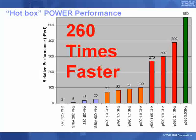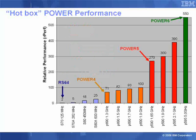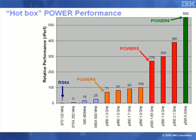Now let me explain the colour coding on this graph. The initial four years were based on a machine based on the Power RS64 chip, and the computer ran as a single image — a single operating system running one or more workloads. But in 2001 we introduced the Power 4 based machines. This gave us the logical partition technology, and shortly afterwards the dynamic logical partitions, where we could change these logical partitions with the operating systems still running.